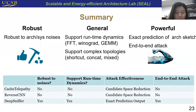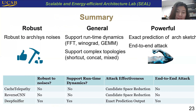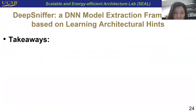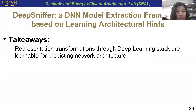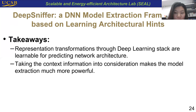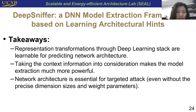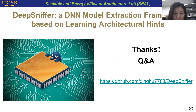In summary, our work proposes a robust, general, and powerful model extraction framework. The takeaways are: first, representation transformations through the deep learning stack are learnable for predicting network architecture; second, taking context information into consideration makes model extraction much more powerful; and third, the network architecture is essential for targeted attacks, even without precise dimension sizes and weight parameters. This is the end of our talk — please contact me or refer to the GitHub link if you want to try DeepSniper. Thank you.